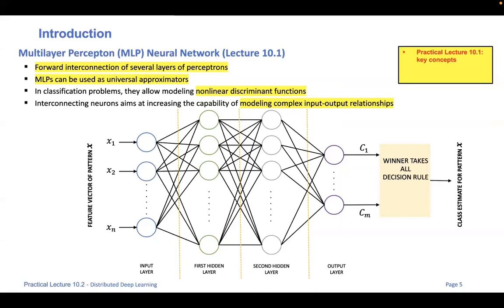Starting now with a recap of Lecture 10.1. I want to start with this figure, which is a multi-layer perceptron. I'm presenting this because it's one of the many possible artificial neural network models. Feed-forward multi-layer perceptrons are easier to understand because you can follow the flow of data through the network — from the input neurons on the left, through the connections to the first hidden layer, all the way to the output layer.